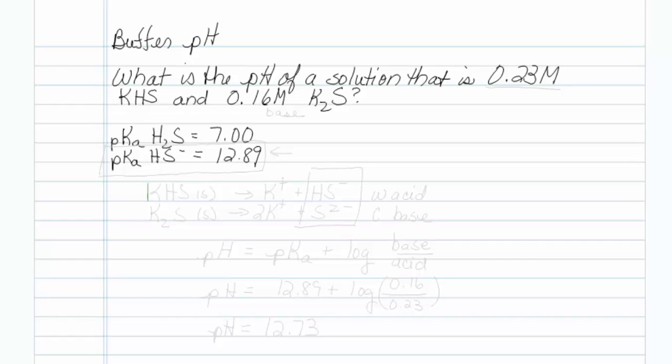This is how to get the pH of a buffer when you're given both the acid and conjugate base concentration.